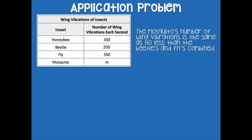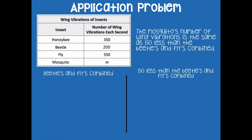Now we're going to look at the mosquito. The mosquito's number of wing vibrations is the same as 50 less than the beetle's and fly's combined. This is a two-step problem. The first part we need to solve is the beetle and fly combined, because if we don't figure out what they combined is first, we can't figure out 50 less than that. Let's look at the tape diagram to help solve it. The second part is figuring out 50 less than the beetle and fly combined.